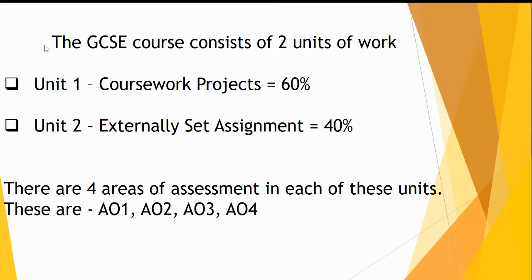Unit 1 is coursework, started at the beginning of Year 10 and completed at Christmas time in Year 11. The course is designed to give students the opportunity to explore a wide range of new photography skills, allowing each student to decide what their strengths are and to focus on those skills in Year 11. This allows each student to create a more bespoke portfolio of their own choices. Students will create a coursework portfolio of sketchbooks and outcomes, which equates to 60% of their final grade.